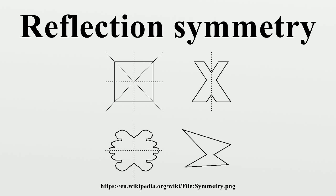In 2D there is a line of symmetry, in 3D a plane of symmetry. An object or figure which is indistinguishable from its transformed image is called mirror symmetric.